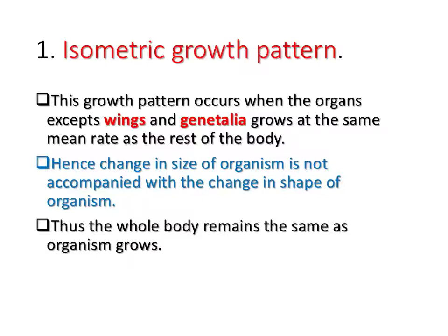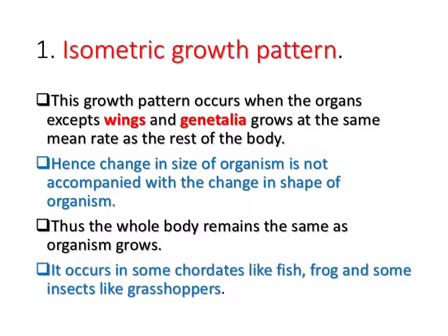Thus, the whole body remains the same shape as the organism grows. In an isometric growth pattern, all organs of the body grow at the same rate. That is why as the organism grows, there is an increase in size but there is no change in shape. The isometric growth pattern occurs in some animals like fish, frogs, and some insects like grasshoppers.